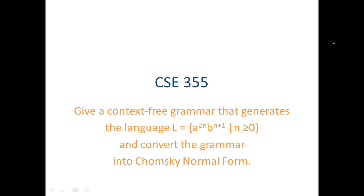In this video, we will give a context-free grammar that generates language L, which is the set of strings a to the 2n, b to the n plus 1, where n is greater than or equal to 0. And then we're going to convert the grammar into Chomsky normal form. So first, let's think about what kinds of strings are in this language.